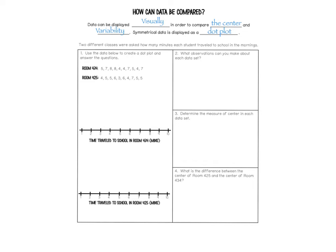Data can be displayed visually in order to compare the center and variability. Symmetrical data is displayed as a dot plot. Two different classes were asked how many minutes each student traveled to school in the mornings. We're going to use the data below to create a dot plot and answer the questions.